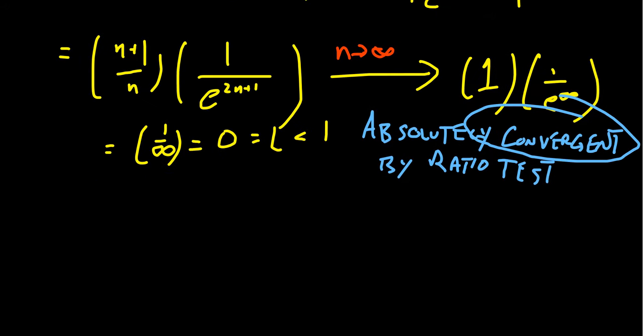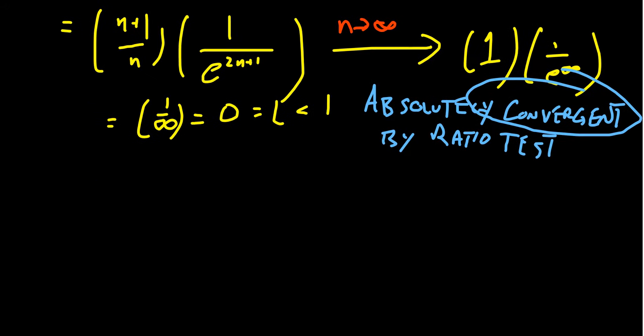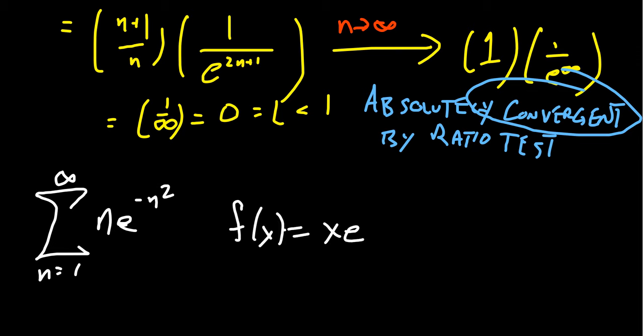But it turns out one could also, I think, another useful strategy here. Let me rewrite this series. N equals 1 to infinity, n times e to the negative n squared here. Another good candidate would be the integral test here. Because if you take the function f of x to equal x e to the negative x squared, like so, there's actually a fairly nice antiderivative to be working with.